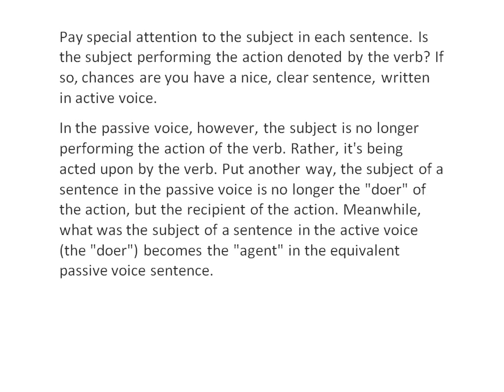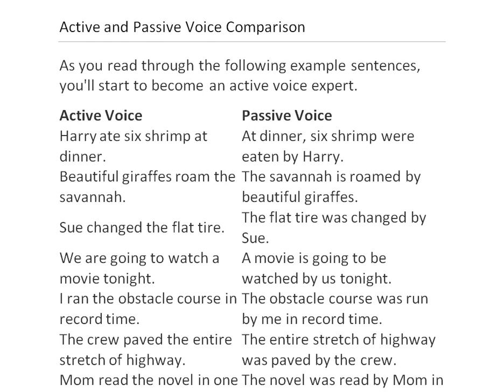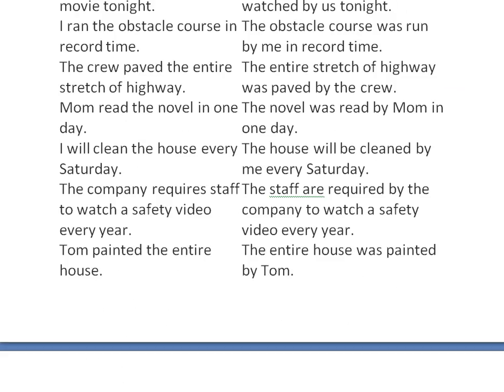Meanwhile, what was the subject in the active voice — the doer — becomes the agent in the equivalent passive voice sentence. Here is a comparison table between active voice and passive voice: 'Harry eats six shrimp at dinner' becomes 'At dinner, six shrimp were eaten by Harry.' 'Beautiful giraffes roam the savannah' becomes 'The savannah is roamed by beautiful giraffes.' 'Sue changed the flat tire' becomes 'The flat tire was changed by Sue.' 'We're going to watch a movie tonight' becomes 'A movie is going to be watched by us tonight.' 'I ran the obstacle course in record time' becomes 'The obstacle course was run by me in record time.'